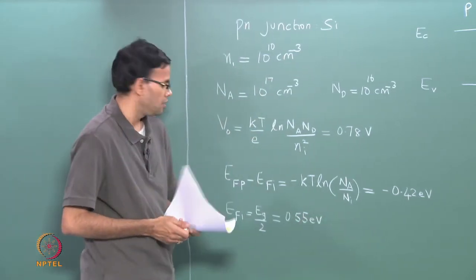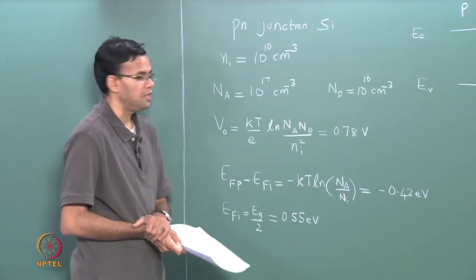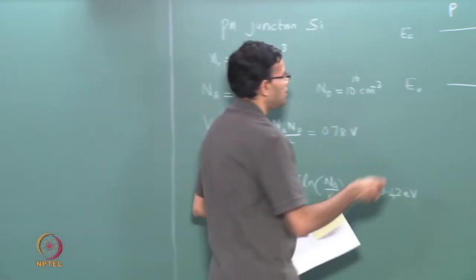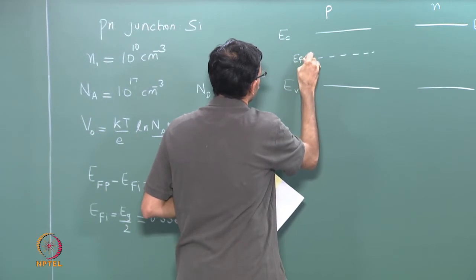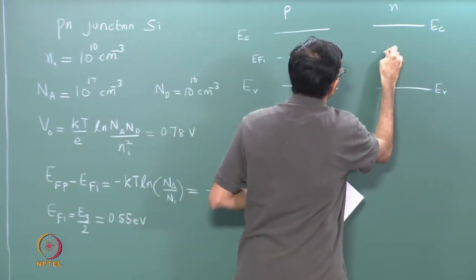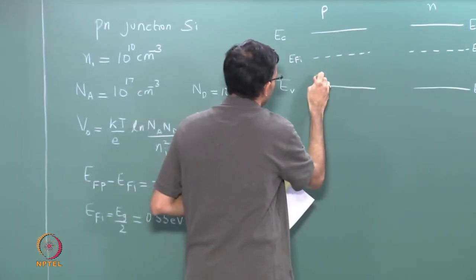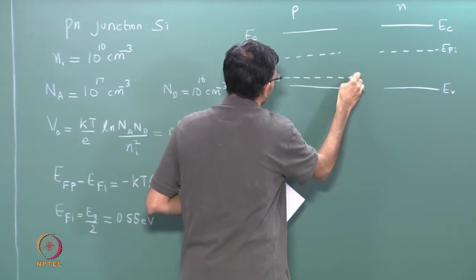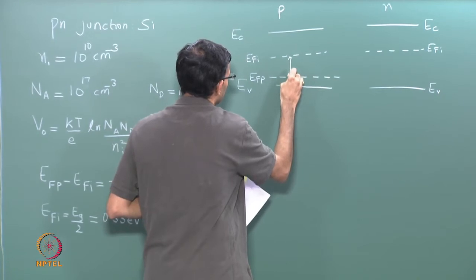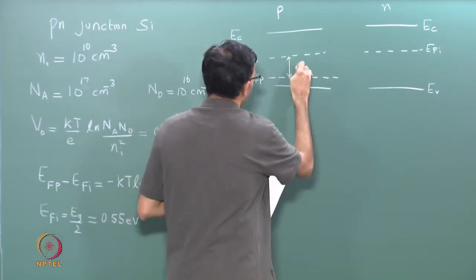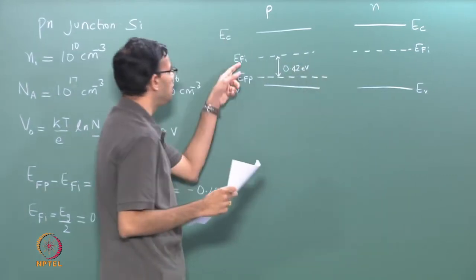E_fi is 0.55. So E_fp we can get by substituting the value of E_fi. E_fi is the centre, and E_fp, which is the Fermi level on the p-type, is 0.42 electron volts below E_fi.